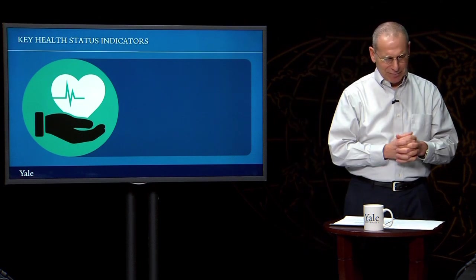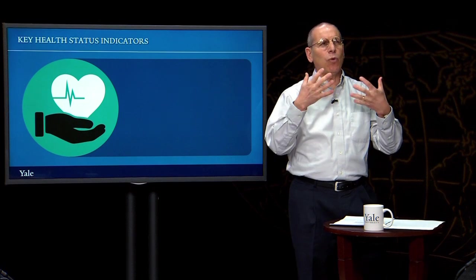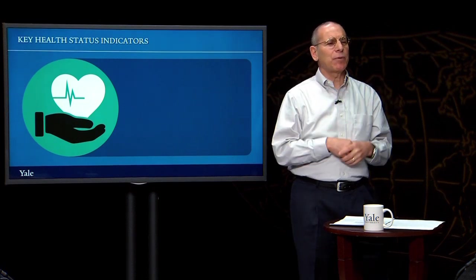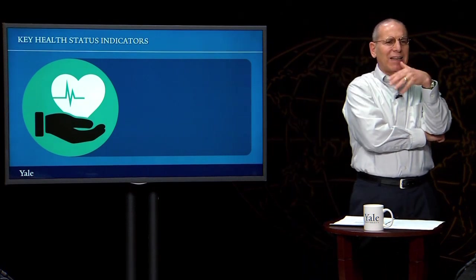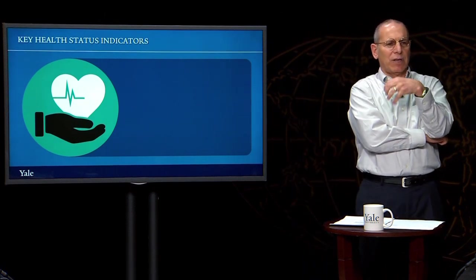A neonate is an infant who's under 28 days old. And why would we pay particular attention to neonates? Because a person is at the most dangerous stages of their lives at the very beginning and at the very end of it. So looking at neonates indicates the risk of death at the start of life.